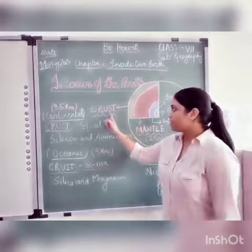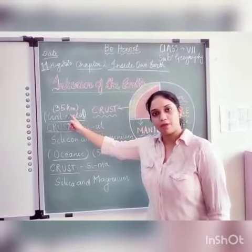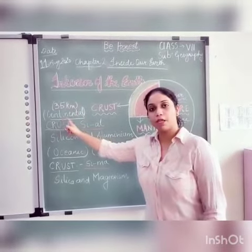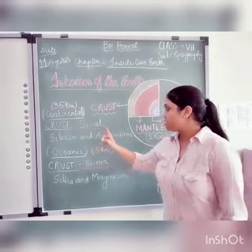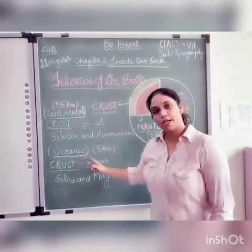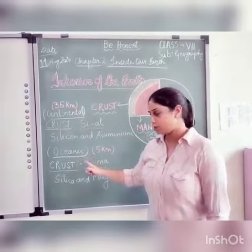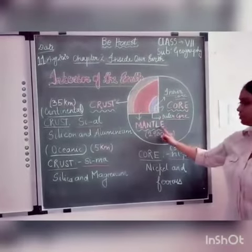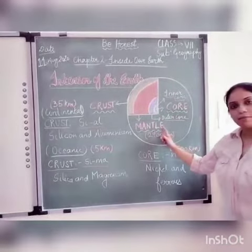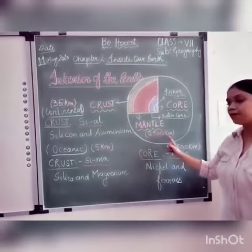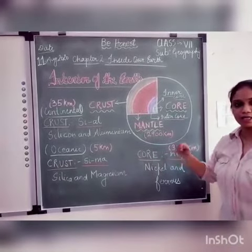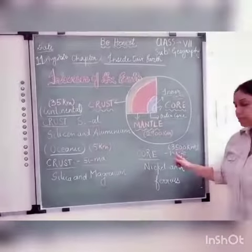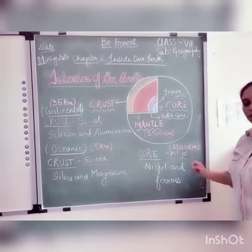The crust extends up to 35 kilometers, which is the part of the continental surfaces. The crust also covers the oceanic part, which is 5 kilometers. The mantle covers 2900 kilometers inside the earth, and the core is 3500 kilometers.